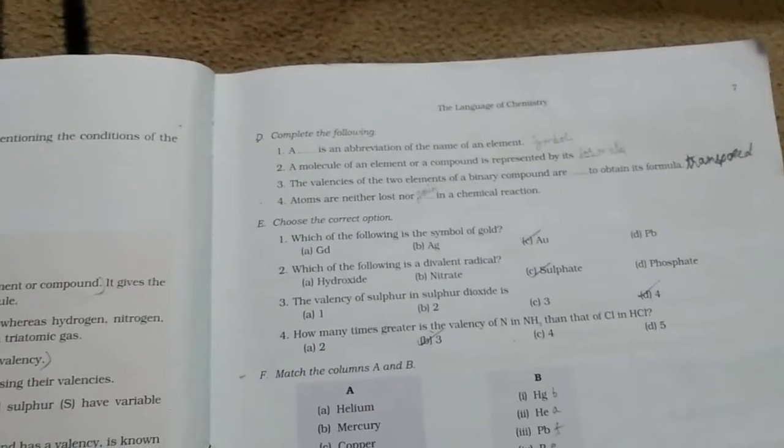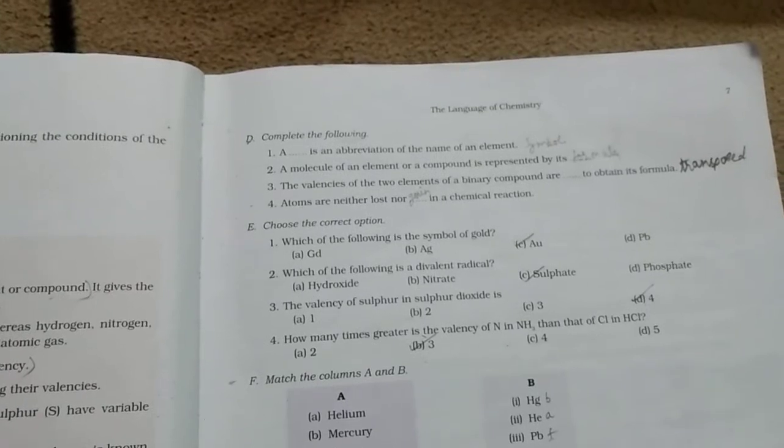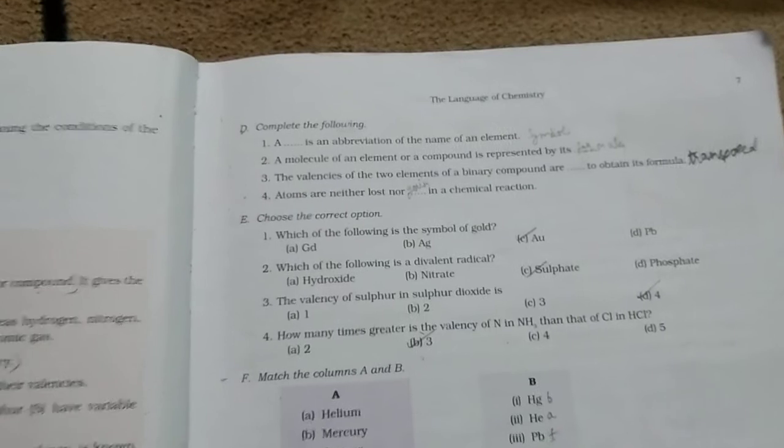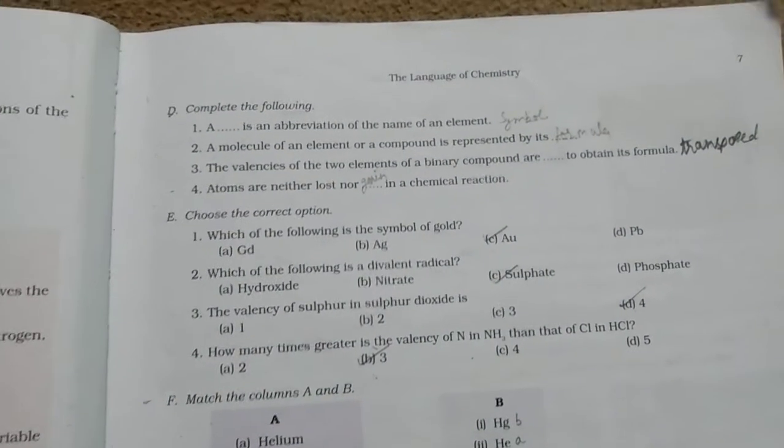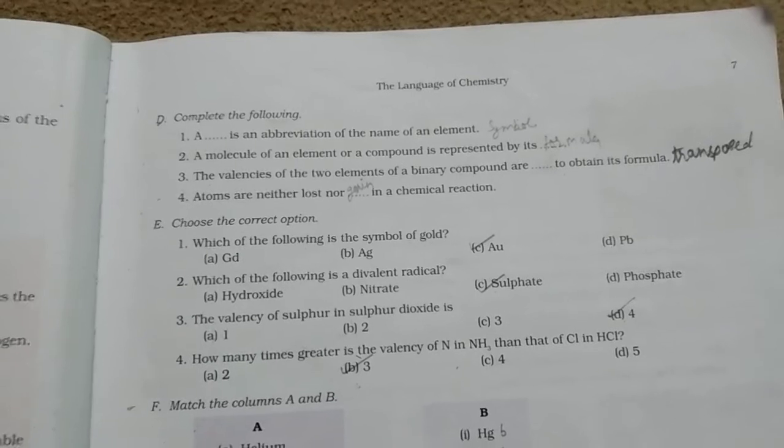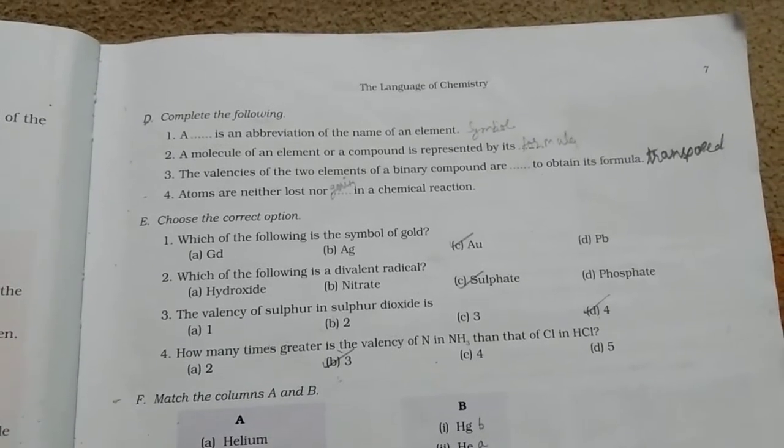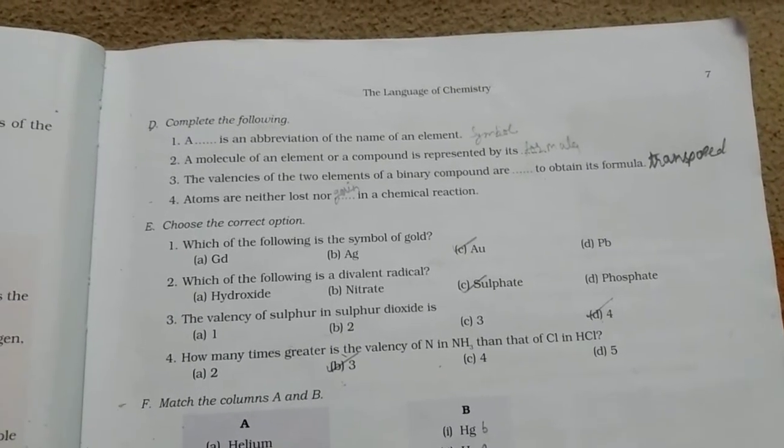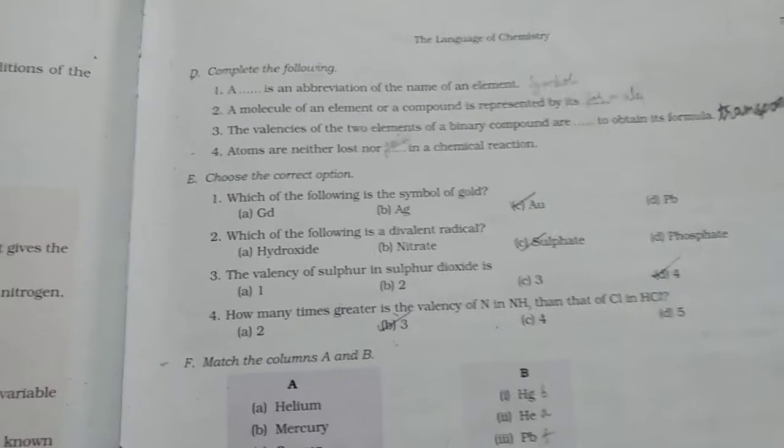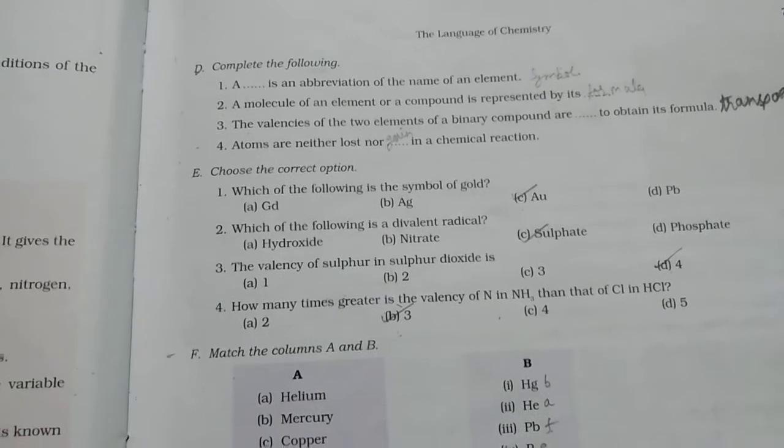Children, now, book work. Question number D. Blank A. First, a dash is an abbreviation of the name of an element. The answer is symbol. Second, a molecule of an element or compound is represented by its formula. The valencies of the two elements of a binary compound are transposed to obtain its formula. And the fourth is, atoms are neither lost nor gained in a chemical reaction.